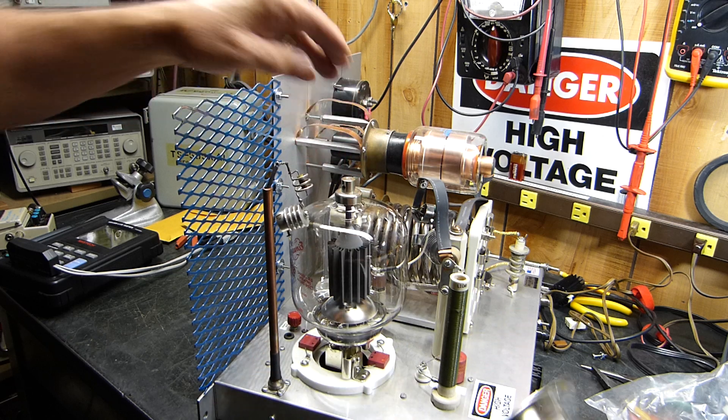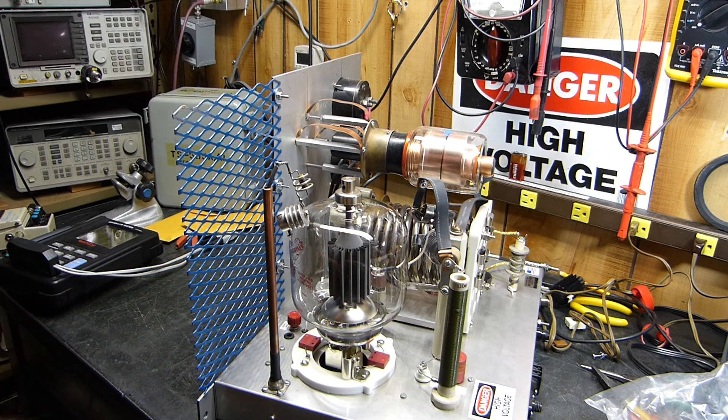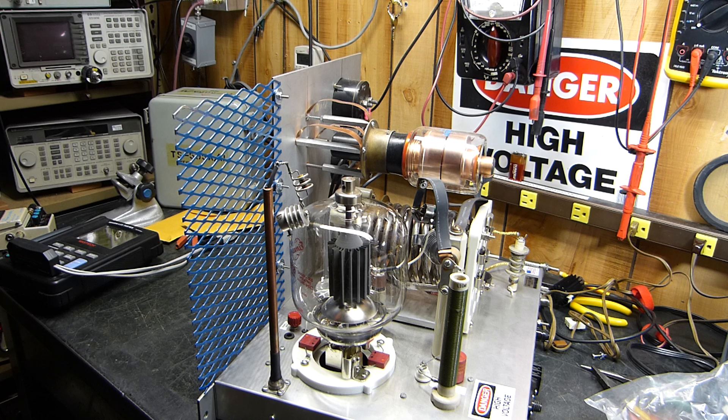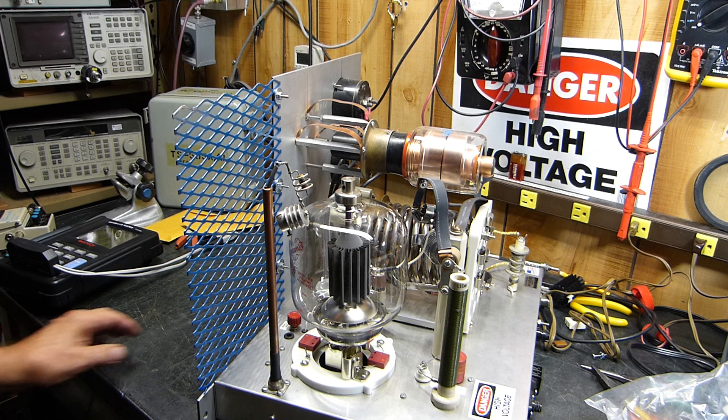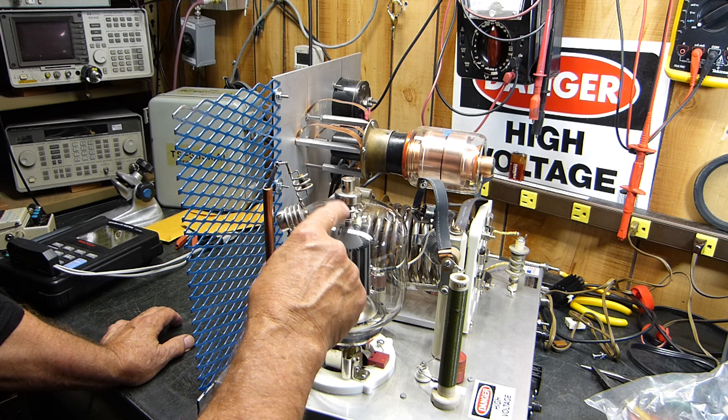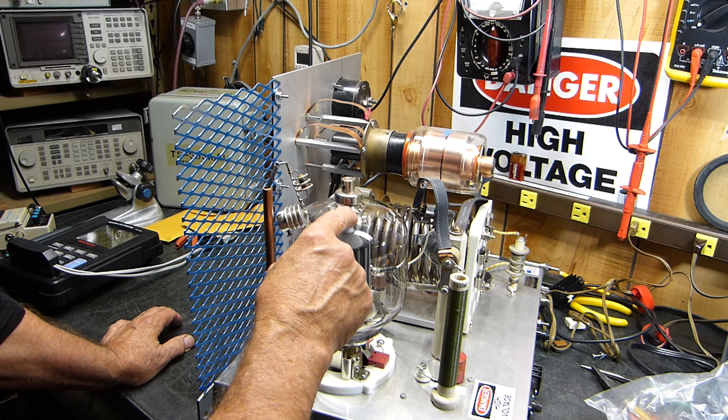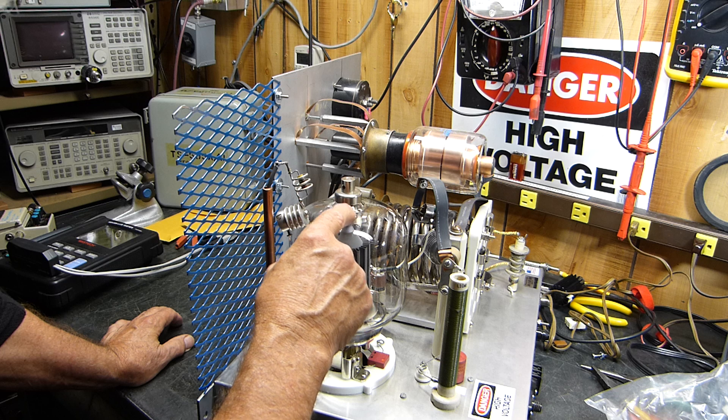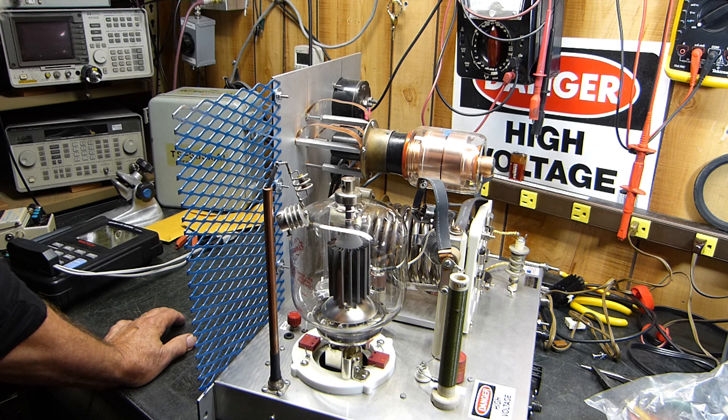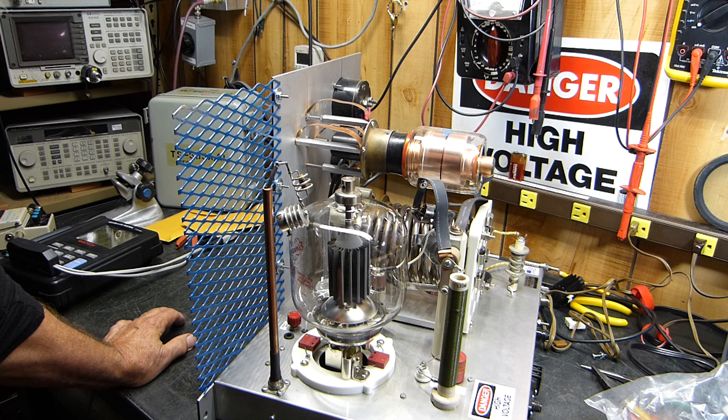Make it a grounded grid. The gain of these triodes is 200. The gain of that 833 is something like, I don't know, I can't remember, I think it's something like 30. And I'll get well over twice the power out of this guy right here.